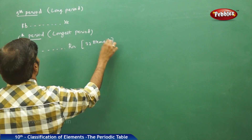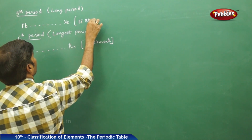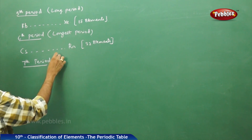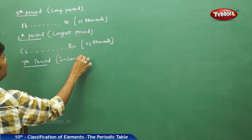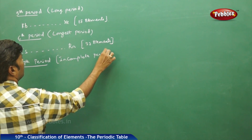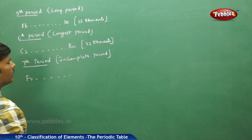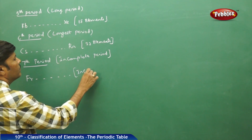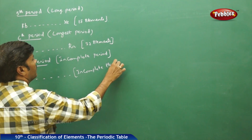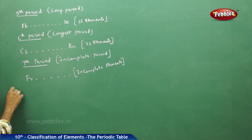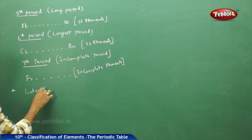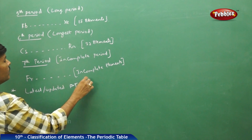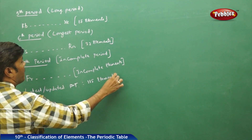The sixth period has 18 elements in its main part, and the seventh period is the incomplete period — it starts with francium and is an incomplete period, so the ending element need not be mentioned here. In fact, today's latest updated periodic table contains almost 115 elements, which we have to keep in mind.